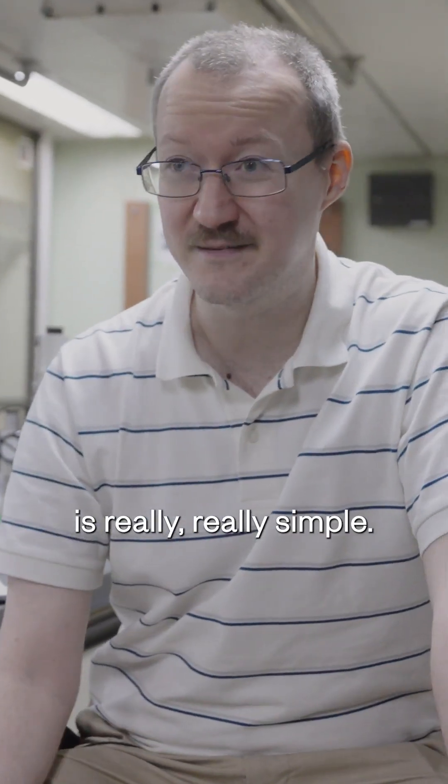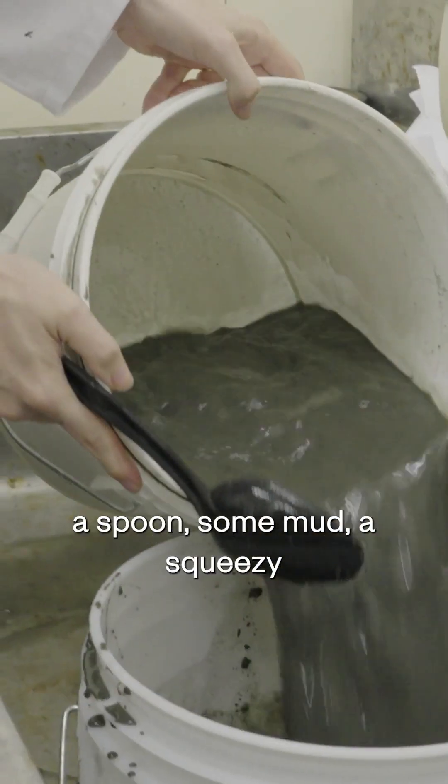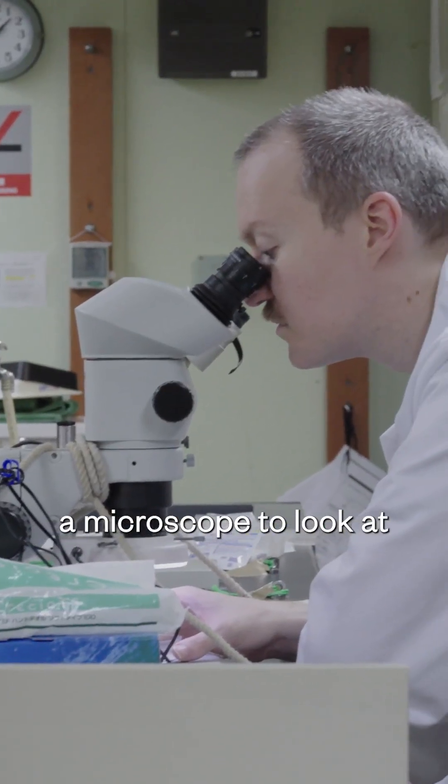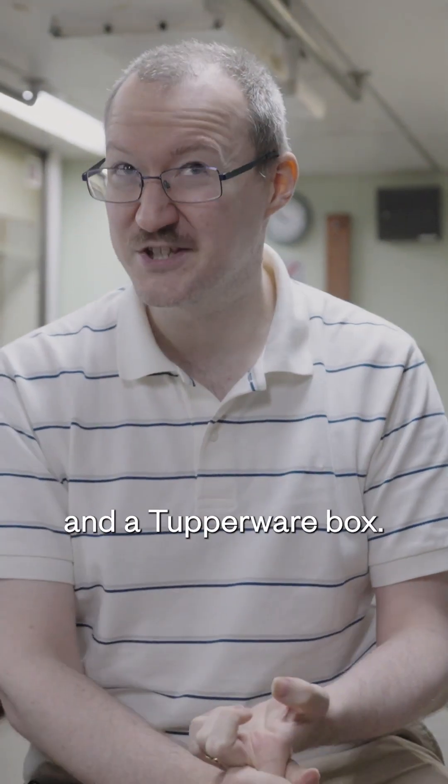Bubble and block is really simple. First, what you need are two buckets, a spoon, some mud, a squeezy bottle of any kind, a microscope to look at, and the most important part, some printer paper and a Tupperware box.